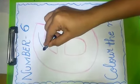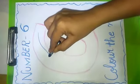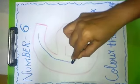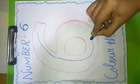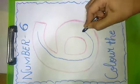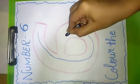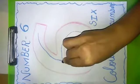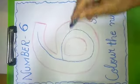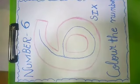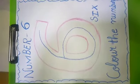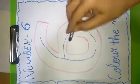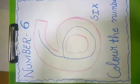Down, around, in a circle you go. That's a 6 just as you know. Number 6.